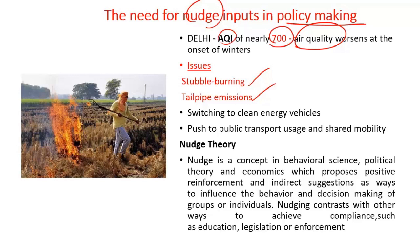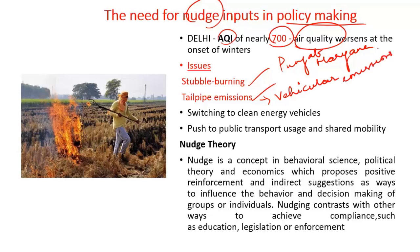Stubble burning is caused by the burning of wheat stalks in Punjab and Haryana, and tailpipe emissions are vehicular emissions. One possible solution to cut down tailpipe emissions is switching to clean energy vehicles, but this is a long-drawn process and in the short term it's not going to yield any result. So the government policy should involve nudge-based inputs to push people to use public transport.